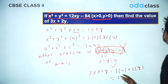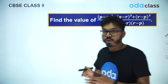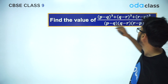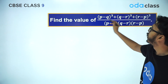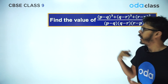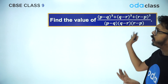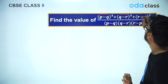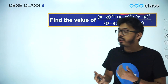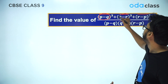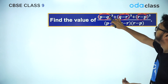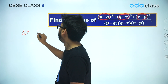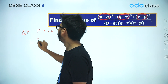Now I have another question. This is a little bit tricky. One way to solve it is to expand each cube and factorize, which works but is lengthy. Let's use the identity instead. The question asks: find the value of [(p−q)³ + (q−r)³ + (r−p)³] / [(p−q)(q−r)(r−p)]. I can see a cube here, a cube there, and a cube there — matching the form a³ + b³ + c³. So I'll assume a = (p−q), b = (q−r), c = (r−p).